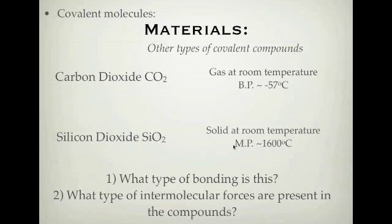Silicon dioxide has a melting point in excess of 1600 degrees Celsius - a very high melting point - and is a solid at room temperature. It contains a metalloid and a non-metal, so it is a covalent compound. However, the type of bonding present in silicon dioxide is actually a covalent network lattice, due to this very high melting point caused by strong intramolecular forces. So the melting point and state of a substance tells us what type of bonding we have.